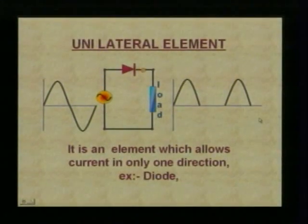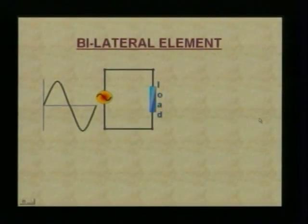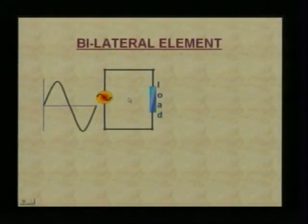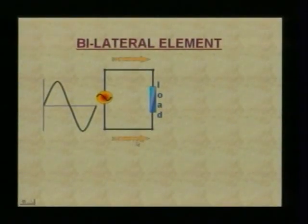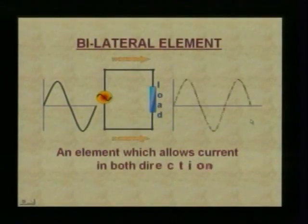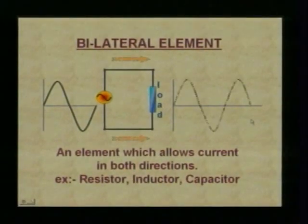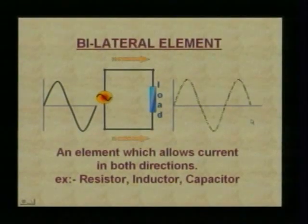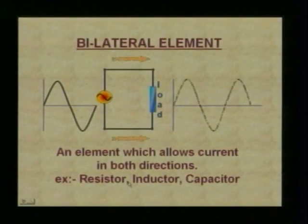Now let us talk about the bilateral element. A bilateral element allows the flow in both directions. This is one direction and we can have flow in the other direction as well. So we have AC as input and we get AC as output. An element which allows current in both directions is a bilateral element. Examples: resistor, inductor, and capacitor.